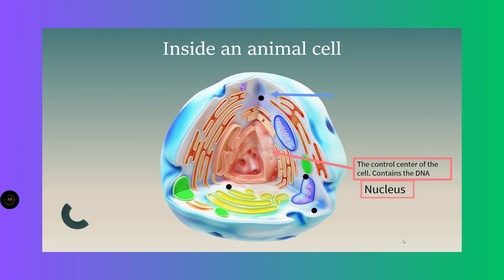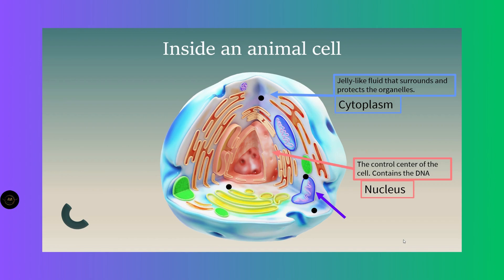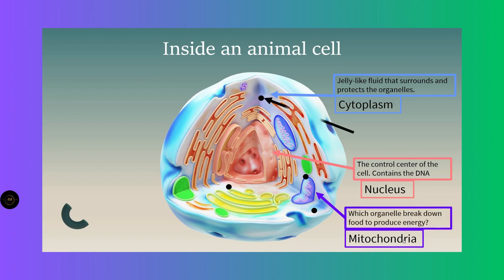The second organelle is this blue, jelly-like structure inside the cell in which different cell organelles can move and different chemical reactions happen. The name of this cell organelle is the cytoplasm. The next one, where the purple arrow is pointing, is called the mitochondria. Mitochondria is the cell organelle where cellular respiration happens — the process in which energy is produced, because every cell needs energy.